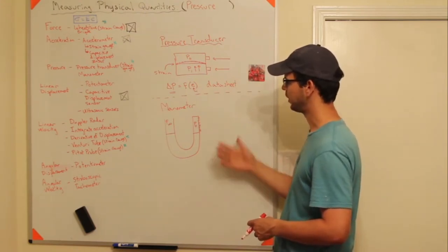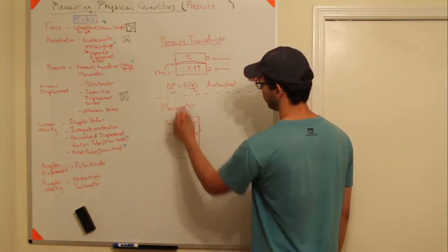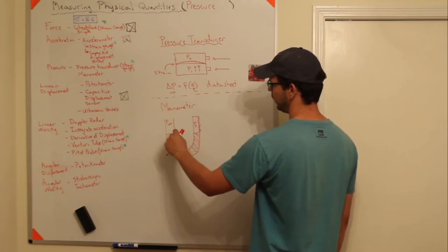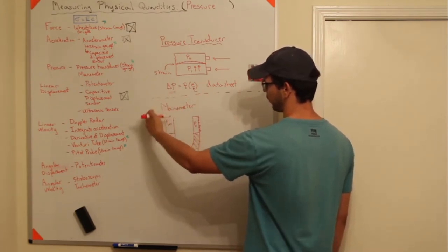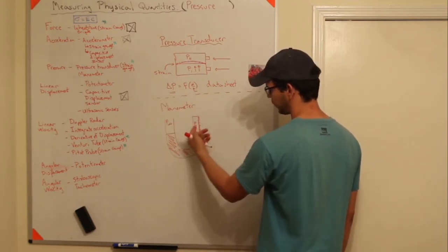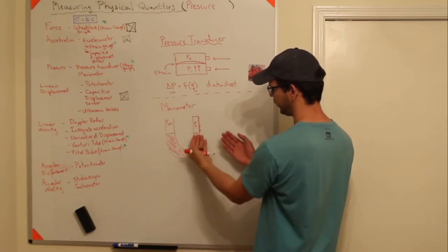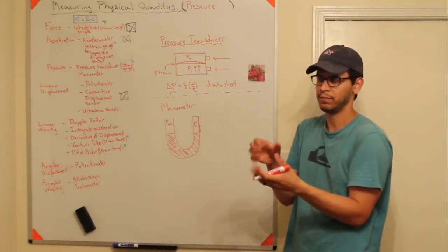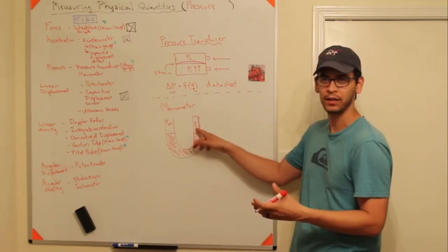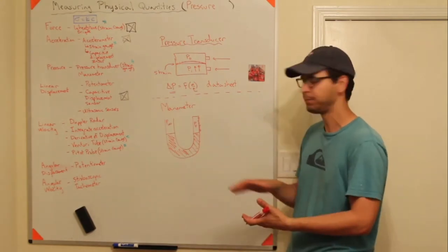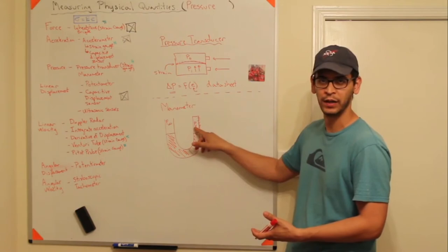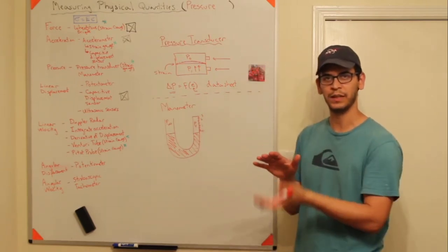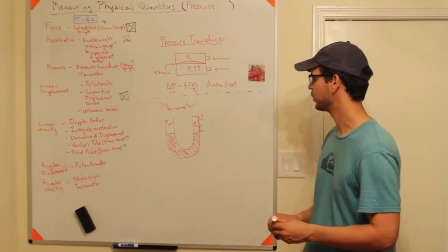Another way to measure pressure is a manometer, which operates on the same principle. You have a fluid in a tube with one closed port — constant mass of air inside — and one open port. If pressure increases on the open side, it compresses those air molecules. With a scale on the side, you can calibrate that to measure pressure based on how far the fluid moves.